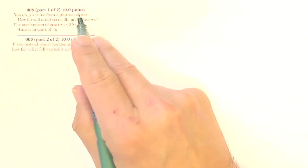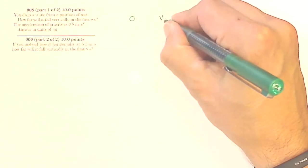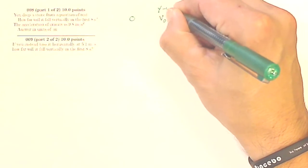Question 8 says, you drop a stone from a position of rest. So, here's my stone and I'm just dropping it. From a position of rest, that tells me that my initial velocity is 0 in the y world.